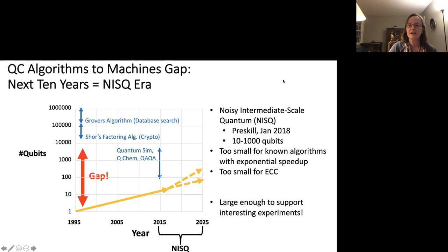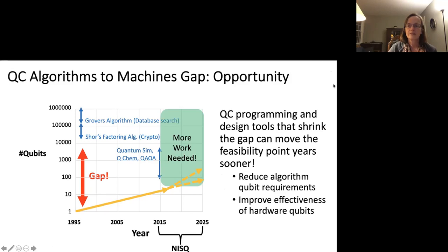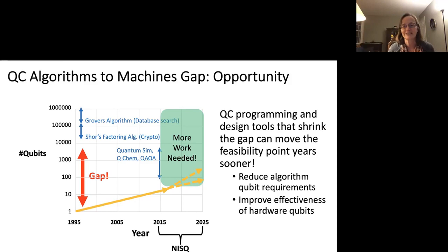John Preskill referred to the era we're in now as the Noisy Intermediate-Scale Quantum, or NISQ era — roughly 10 to 1,000 qubits. Too small for anything like Shor's, too small for error-correcting codes that would help with reliability issues, but large enough to be interesting. What's a classical architect doing in a place like this? It turns out there's an awful lot of work that can happen to basically shrink the gap between algorithms and hardware using compilers and classical architecture techniques. That's where my research has focused.